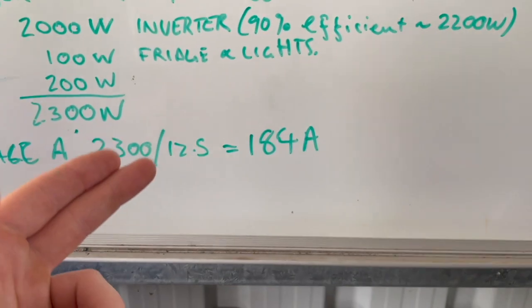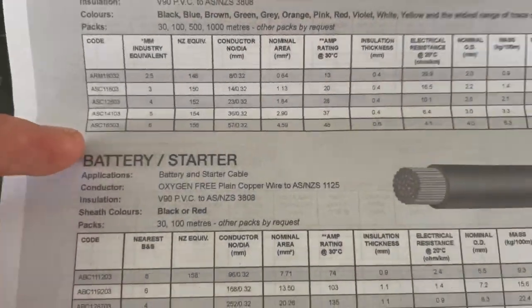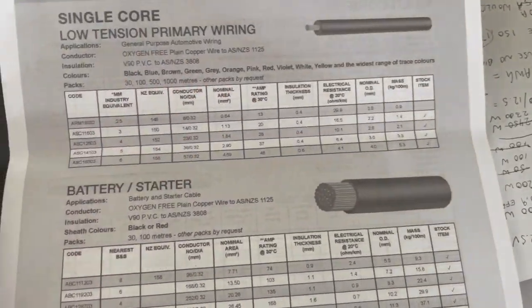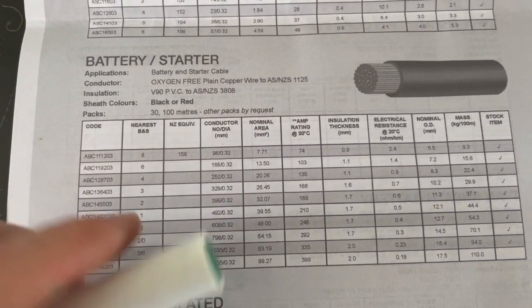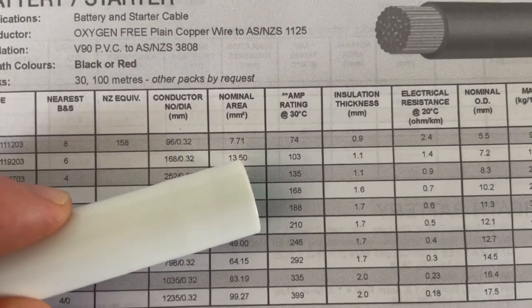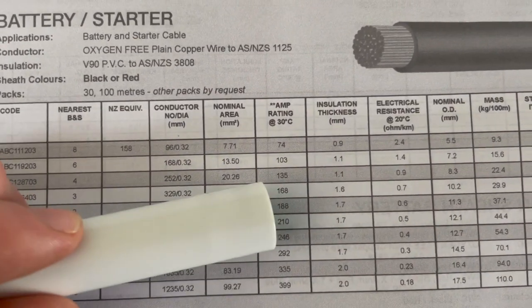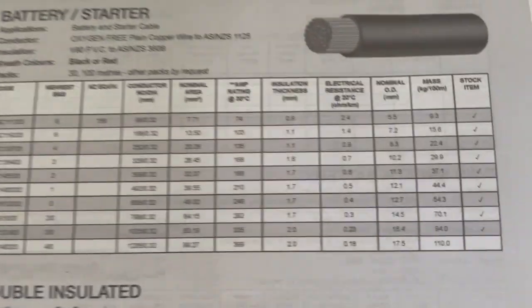So, when we work out what our maximum continuous current is, then we go back and grab our Tycab spec, and go look up all the different cables. We'll go to battery and starter, this is a single cable. So, we go down the list here, a 2 gauge has an operating current at 30 degrees of 188 amps, a 1 gauge is 210 amps.